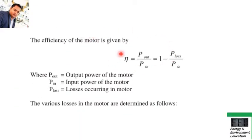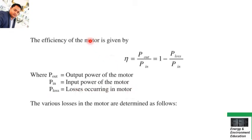Another important formula for the exam is the efficiency of the motor. The formula is power output divided by power input, or alternatively 1 minus power loss divided by power input. P_out is the output power of the motor, P_in is the input power, and P_loss is the losses occurring in the motor. You can use either of these two formulas when calculating motor efficiency in the exam.